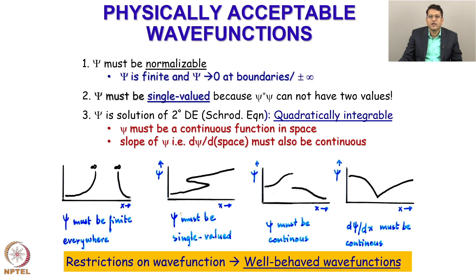What are these restrictions? Because psi star psi is related to the probability density, psi has to be finite and psi will be zero at the boundaries, whatever the boundary condition is, because remember total probability has to be 1. Psi must be single valued because psi star psi cannot have two values, because the probability cannot be two at the same point.